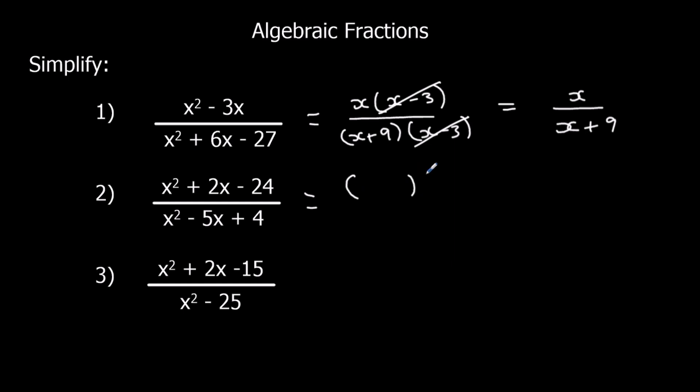Okay, double bracket the top, double bracket the bottom. 24, 6 times 4. So x plus 6, x minus 4, and 4 and 1. So x minus 1, x minus 4. x plus 6 over x minus 1.